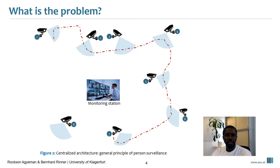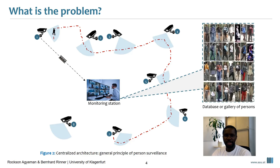Images or videos are collected from cameras to a central computer for processing, and this is because existing person re-identification algorithms require far more memory and computational resources than camera nodes can presently support.